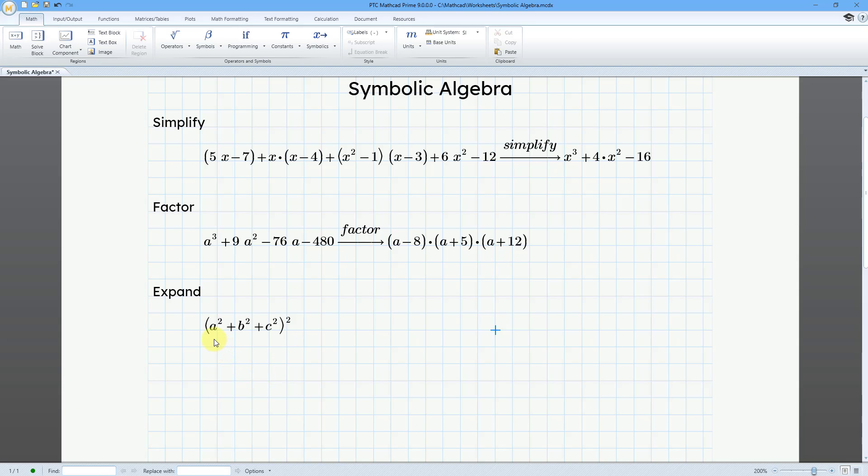And then for the third one, here we have (a squared plus b squared plus c squared) all squared. We want to expand this out.